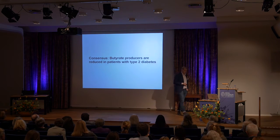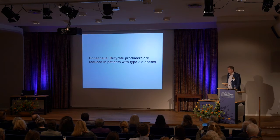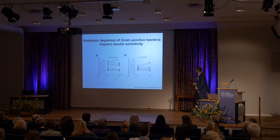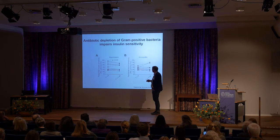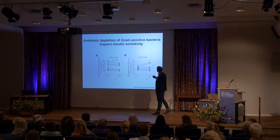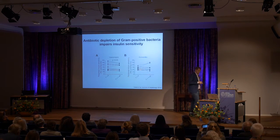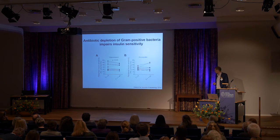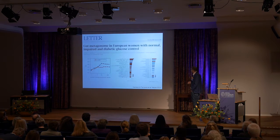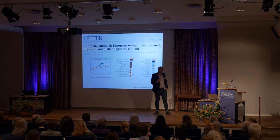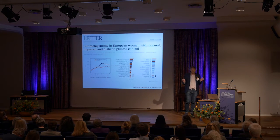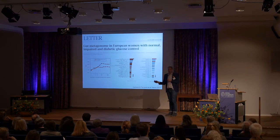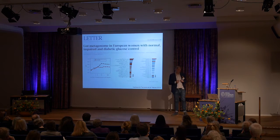The consensus is that butyrate-producing bacteria are reduced in patients with type 2 diabetes. Work from Max's lab shows that using vancomycin, which reduces butyrate-producing bacteria, actually reduces insulin sensitivity; but using an antibiotic that targets gram-negative bacteria does not show that effect. This suggests a causal relationship in humans: butyrate-producing bacteria may protect against insulin resistance. In our study, we were also able to build an algorithm based on the microbiome to classify those with type 2 diabetes from healthy individuals.